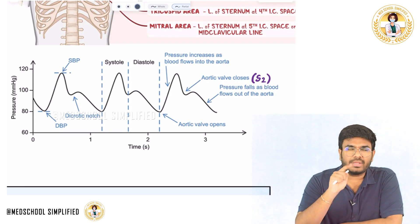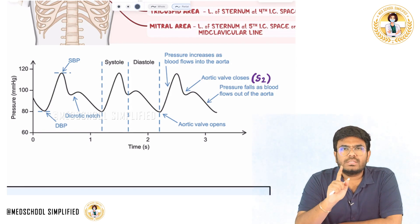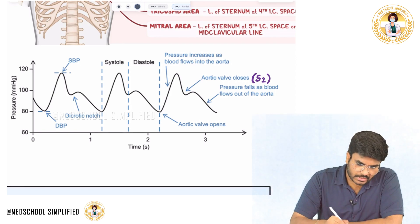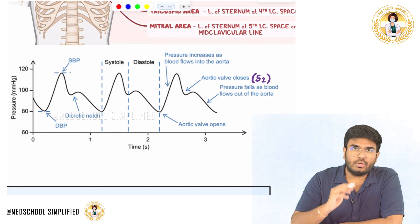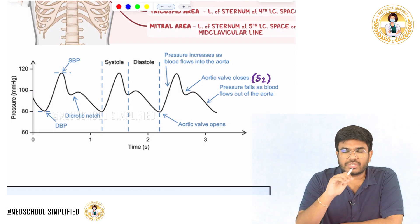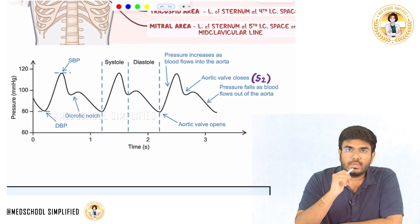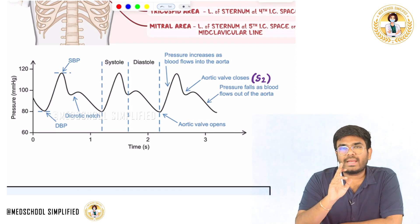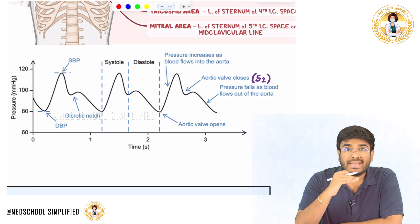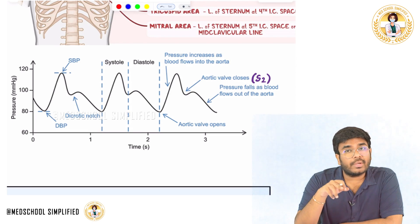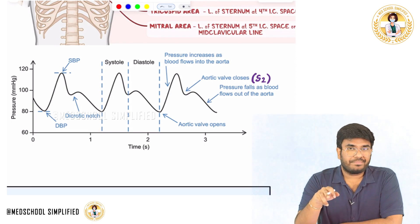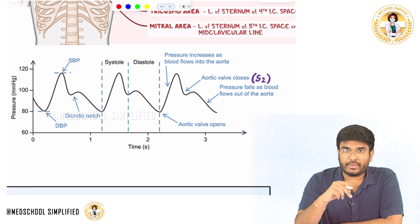During systole, during the rapid ejection phase, the pressure is going to rise. The pressure is going to rise from 80 to 120. During the rapid ejection phase, the pressure rises in your heart, so more blood will come into your aorta.